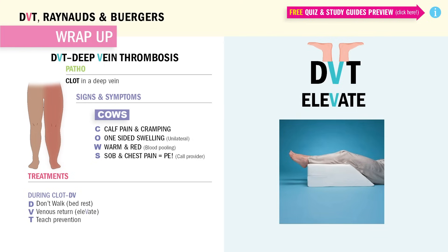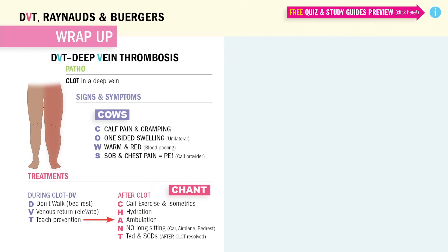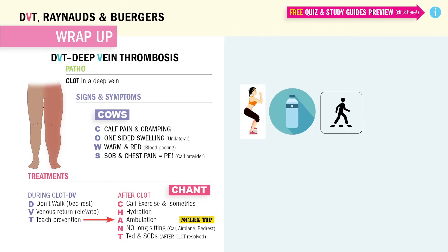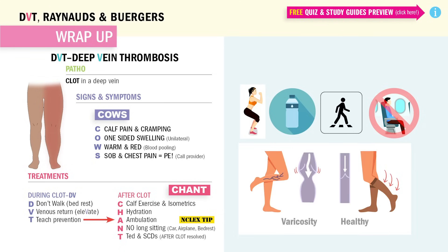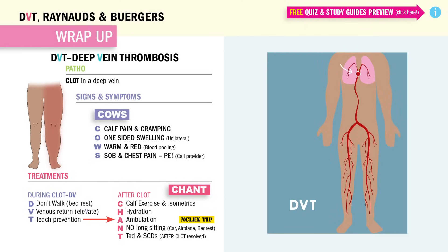After the clot is resolved, we teach CHAT. C for calf exercises. H for hydration. A for ambulation. N for no long sitting — like in a car, airplane, or even bed rest. And T for TED stockings and SCDs. Again, only after the clot is resolved — if you do these things during a clot, it's going to break that clot loose and send it straight to the lungs.